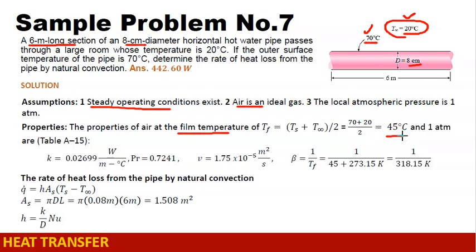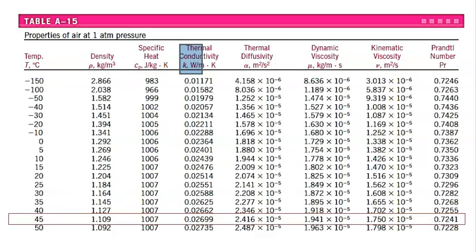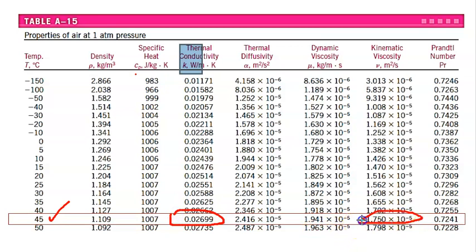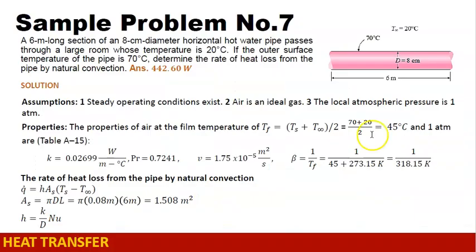We will look at Table A15. At 45 degrees Celsius, the value of K is 0.02699, the value of kinematic viscosity is 1.75 times 10 to the negative 5, and the Prandtl number is 0.7241. We will use the values of K, Pr, and ν.